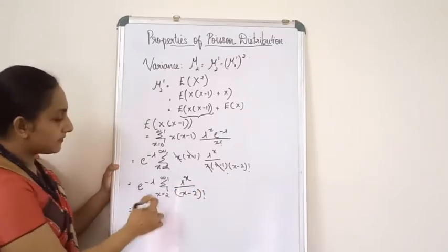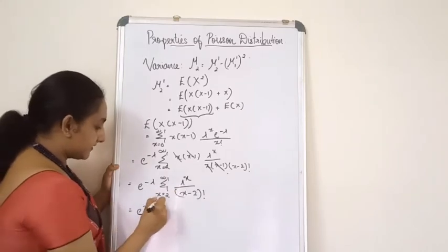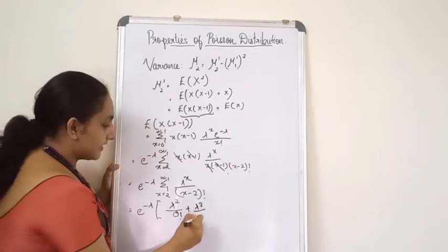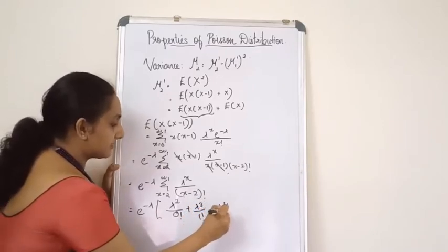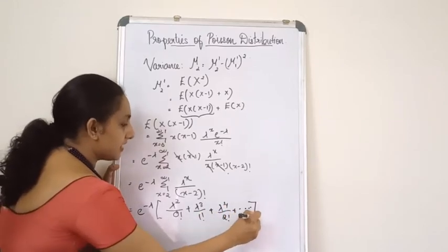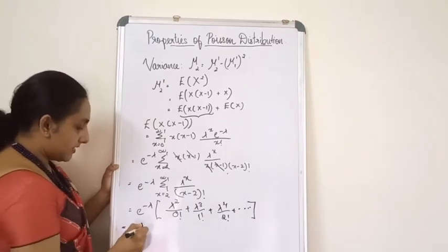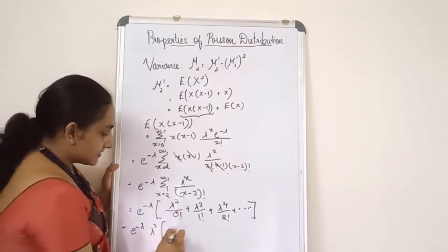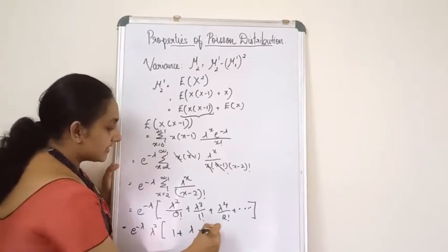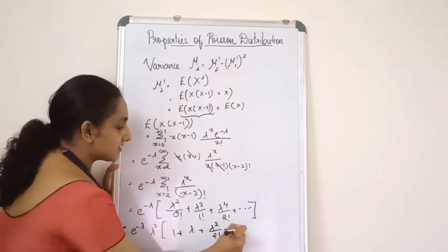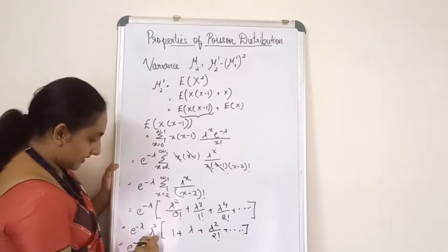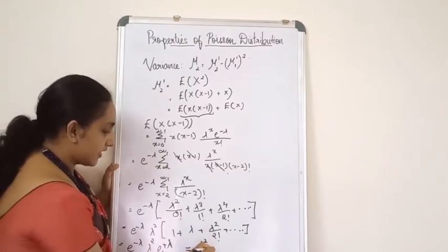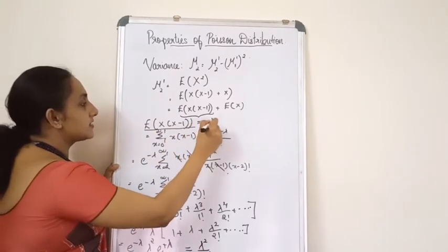Expanding the series: λ²/0! + λ³/1! + λ⁴/2! + etc. Taking λ² outside gives λ² · (1 + λ + λ²/2! + …) = λ² · e^λ. So E[X(X−1)] = e^(−λ) · λ² · e^λ = λ².